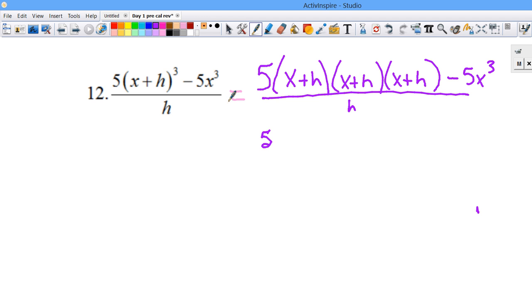So that's going to be 5. Go ahead and do the first two first, the x plus, or the second two. x squared plus xh plus xh is 2xh plus h squared minus 5x cubed over h.